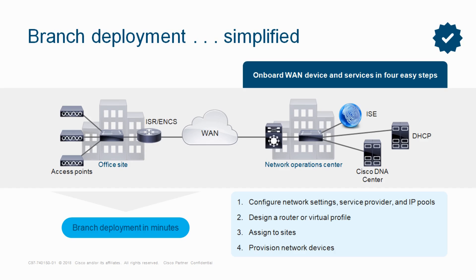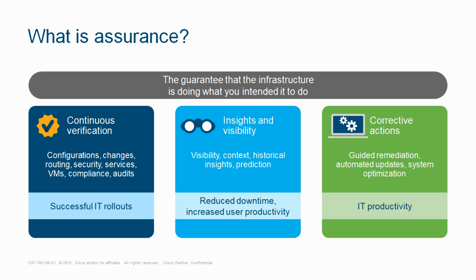For branch deployment, if you want to deploy the same network configuration across branches, just create one site, create a virtual profile for it with the policies you have created, and simply apply the template to that particular branch. With just a few clicks, the branch deployment is done.